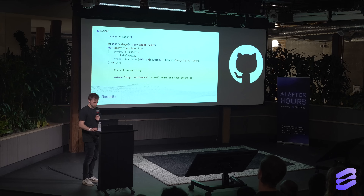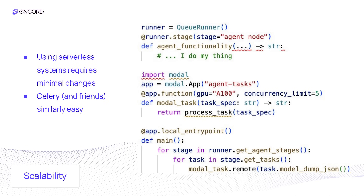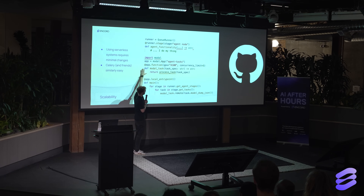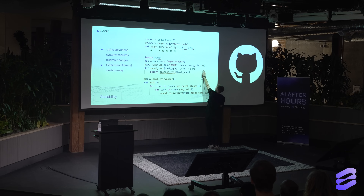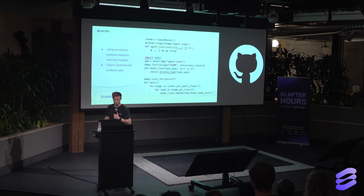That's the flexibility part — you take just what you need. The second part is scalability. Looking at the first four lines of code here, it's essentially the same as before except I created a different type of runner. Now I can put everything into queues: this is my function, this is my worker, I'm using a GPU, and I'm running five instances at the same time. With about ten lines of code, you can scale really, really easily.